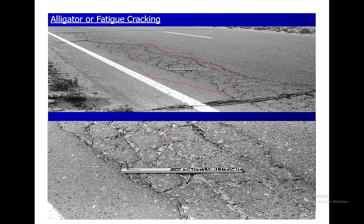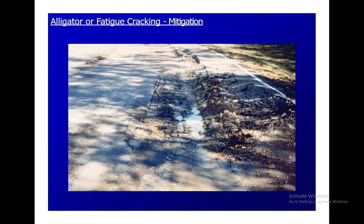This form of cracking occurs when longitudinal cracks connect with transverse cracks in both the x-axis and y-axis directions. Those longitudinal and transverse cracks spread over a large pavement area over a longer period of time. With the passage of time, it starts with a small crack, then reaches a low level, then moderate, and then high. Alligator cracking in asphalt pavement is basically a sign of failure beneath the asphalt surface.